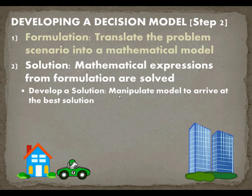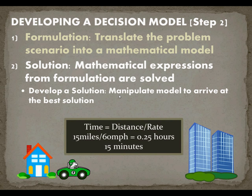We take our mathematical expression from formulation, we've collected our data, and we're going to find the answer. When we develop the solution, we're going to need to manipulate our model to get there. This is either reformatting the equation as we did here, then plugging in the data and allowing it to chug through to get us to the answer. In our case, time equals distance divided by rate: 15 miles divided by 60 miles per hour is a quarter of an hour or 15 minutes.